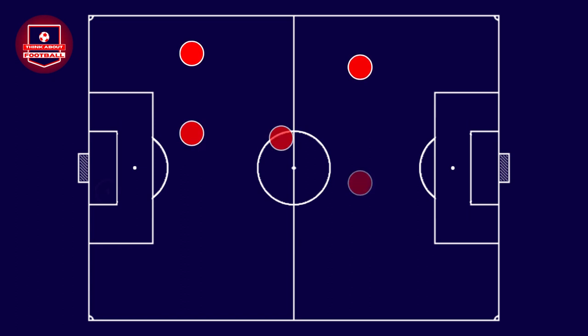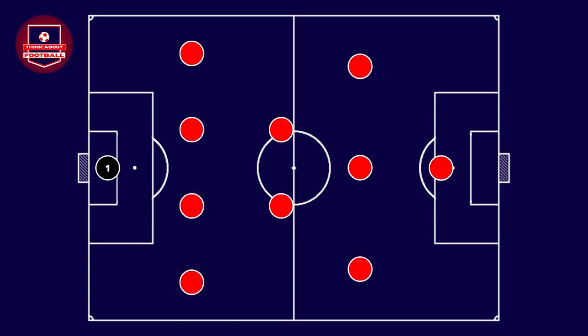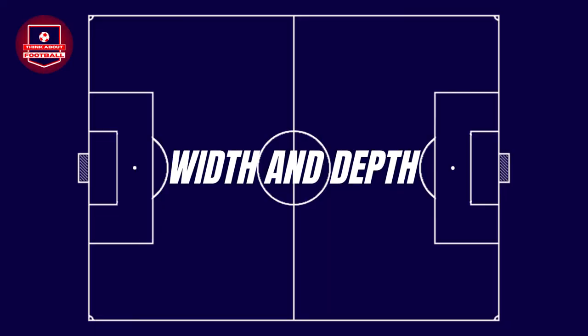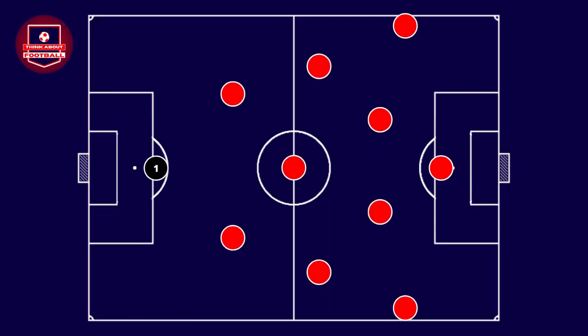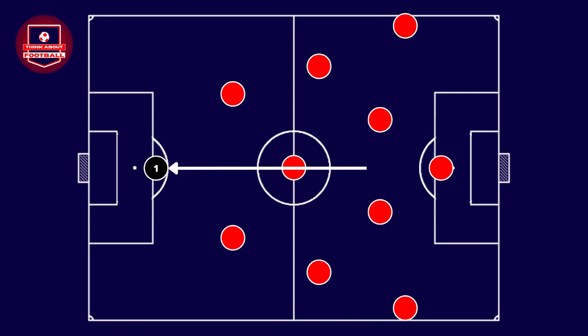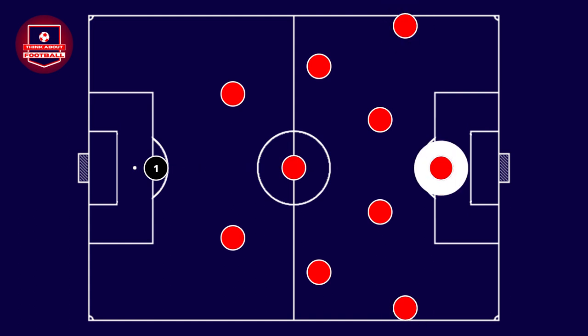But when does a team create spaces to exploit using these three types of offensive maneuvers? In the first case, we introduce the concepts of width and depth. When a team has possession of the ball, it's common for them to try to expand the field — both horizontally, by having players positioned wide on both sides to create width, and vertically, with one or more players moving forward into the opponent's defensive line to create depth.